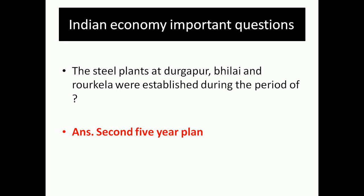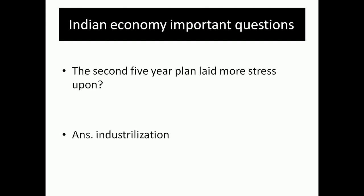After rolling plans — one-year and two-year plans — Five Year planning eventually resumed. The steel plants at Durgapur, Bhilai, and Rourkela were established during the Second Five Year Plan period. The Second Five Year Plan's main focus was industrialization, while the First Five Year Plan, which started in 1951 to 1956, focused on agriculture, power, and transportation.